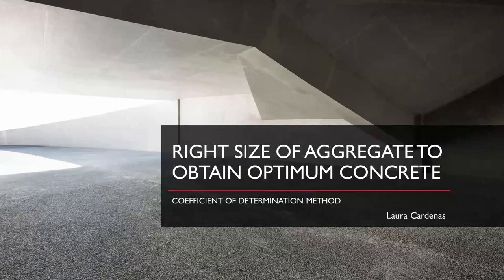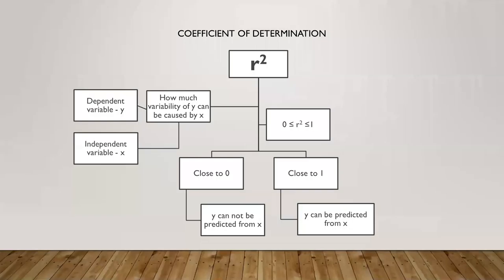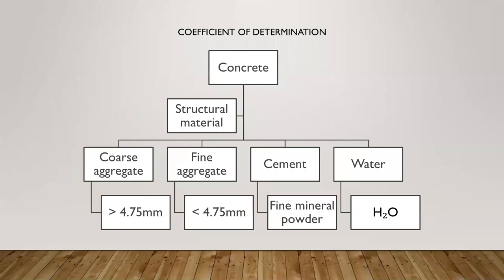Right size of aggregate to obtain optimum concrete using the coefficient of determination method. The coefficient of determination refers to the variability that can be caused to one dependent variable y from another independent variable x. The higher the value of coefficient of determination, the more successful is the simple linear regression model. This method has a range between zero and one. If the value is closer to zero, it means that y cannot be predicted from x. But if the value is closer to one, that means that y can be predicted from x.